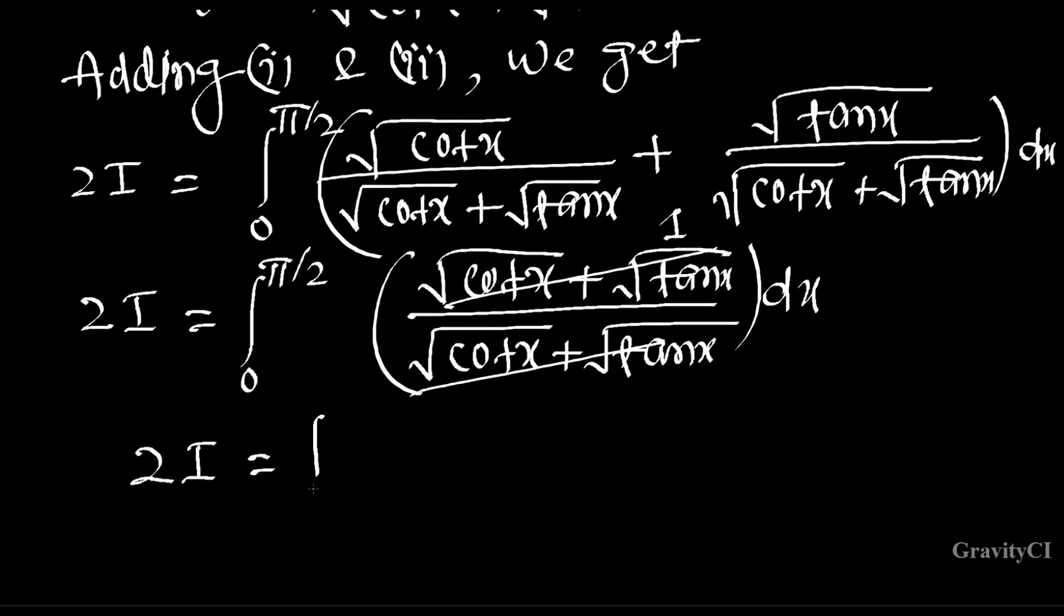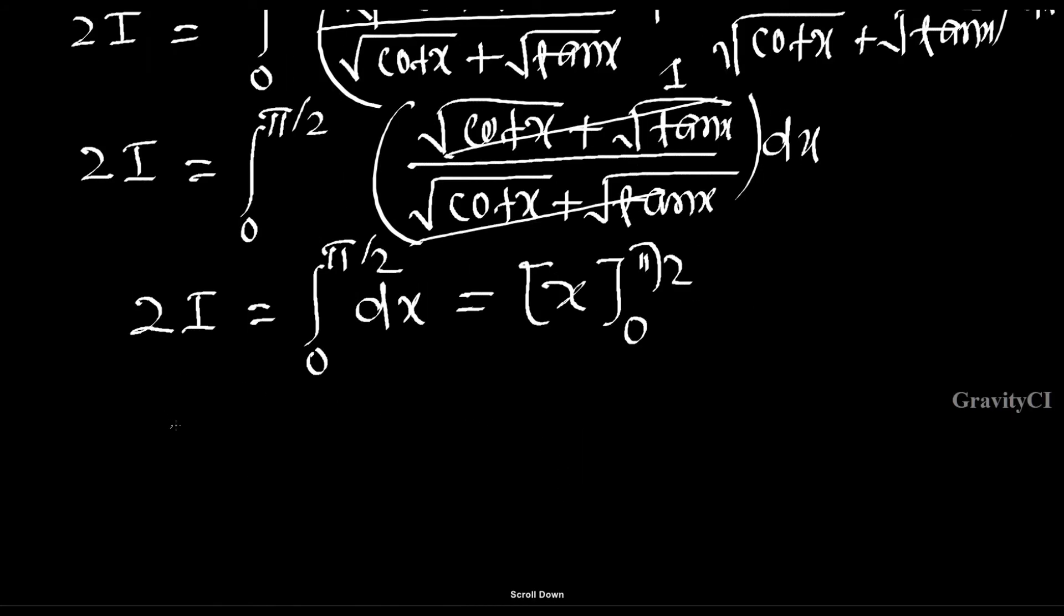So 2I equals integral from 0 to pi/2 of 1 dx. Evaluating this, we get x from 0 to pi/2, which equals pi/2 minus 0. So 2I equals pi/2, therefore I equals pi upon 4, hence proved.